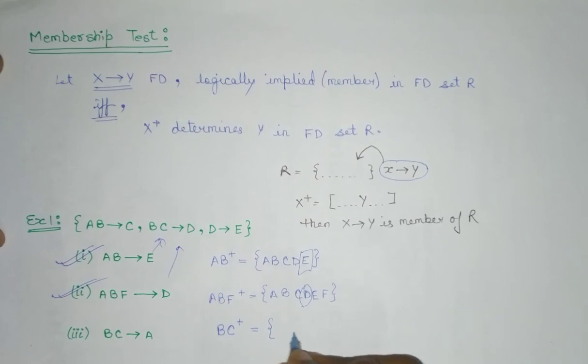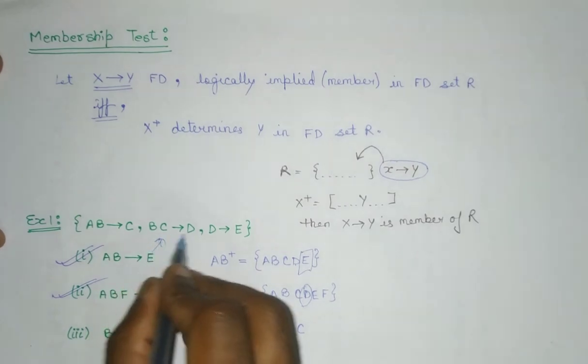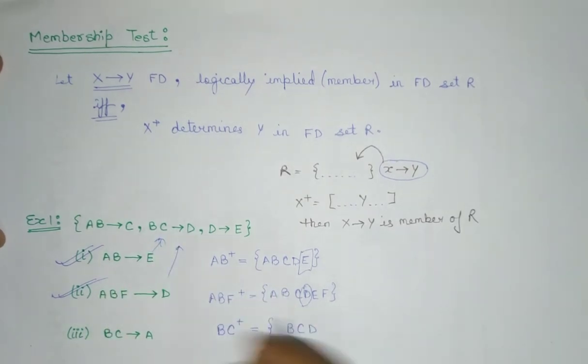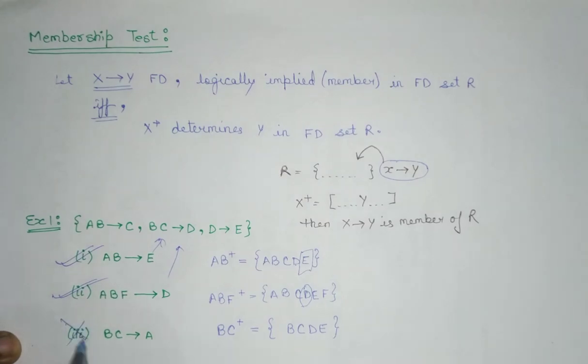BC closure will be nothing but BC because it always defines itself. So it is a trivial one. BC defines D. D defines E. And now you can see that BC does not define A. We are not able to find this A on the attribute closure. So what we can say that this is not a part of this FD set.